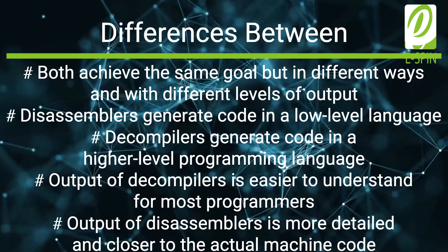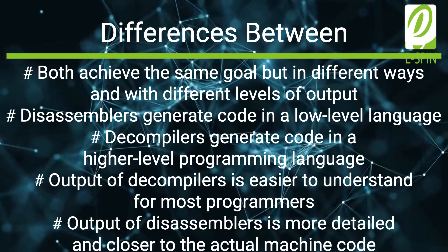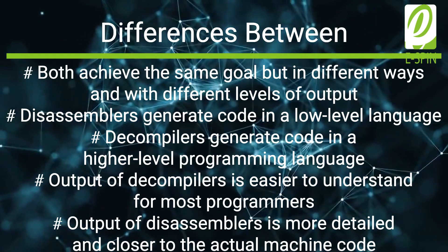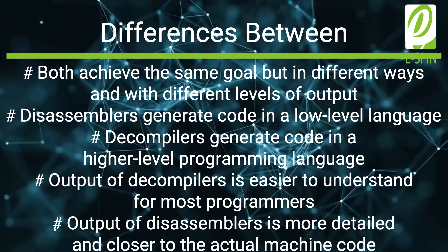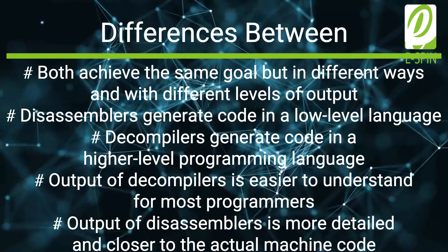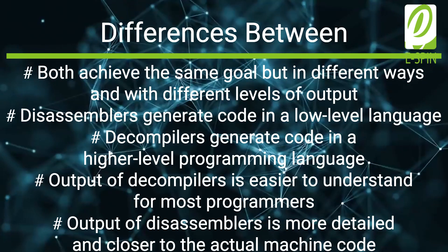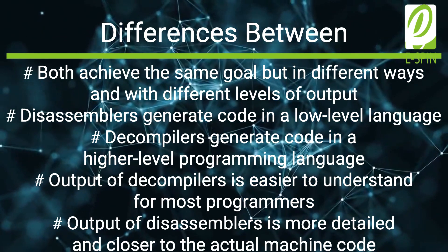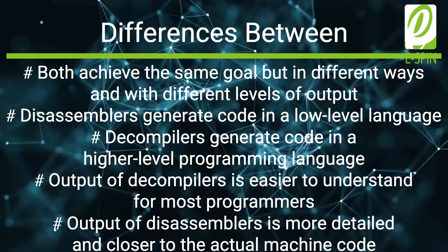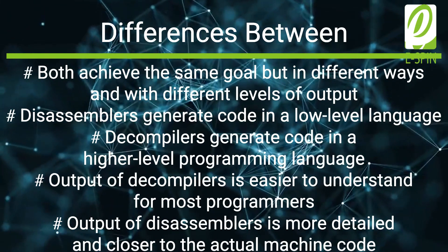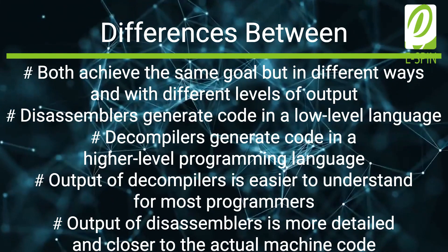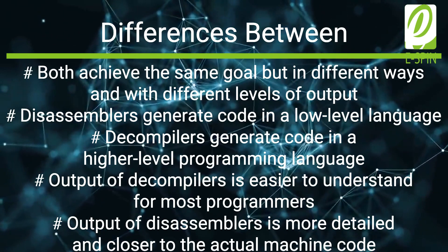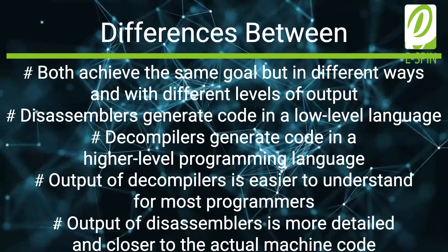Firstly, a disassembler generates code in a low-level language, while a decompiler generates code in a higher-level programming language. This means that the output of a decompiler is easier to understand for most programmers, as it is closer to the way they think and work. Conversely, the output of a disassembler is more detailed and closer to the actual machine code, which can be useful for certain types of analysis.